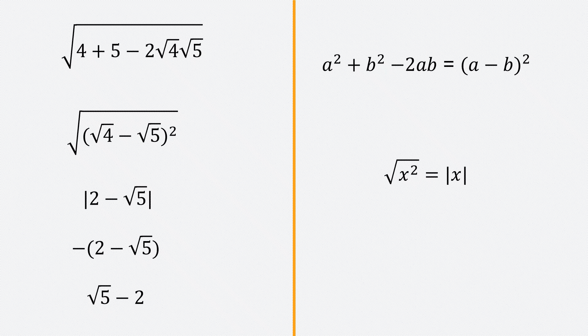So our expression — the square root of (the square root of 81 minus the square root of 80) — evaluates to root 5 minus 2. If you enjoyed this video, make sure to like it. If you like this channel, subscribe for content like this, and make sure to leave a comment as well. Thanks for watching. Bye.